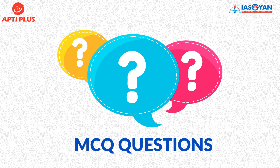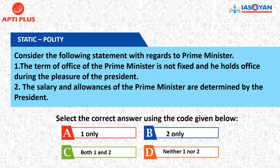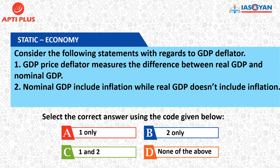Now coming to the MCQ questions of the day. The first question is from polity. Consider the following statements with regards to the Prime Minister. Statement one: the term of office of the Prime Minister is not fixed and he holds the office during the pleasure of the President. Statement two: the salary and allowances of the Prime Minister are determined by the President. Choose the correct option and write your answer A, B, C, or D in the comment section below. The second question is from Indian economy. Consider the following statements with regards to GDP deflator. Statement one: GDP price deflator measures the difference between real GDP and nominal GDP. Statement two: nominal GDP includes inflation while real GDP does not include inflation. You can also share any additional information in the comment section, or simply write the correct option.